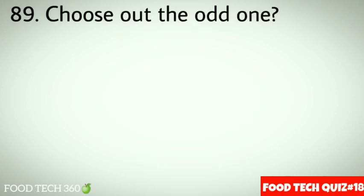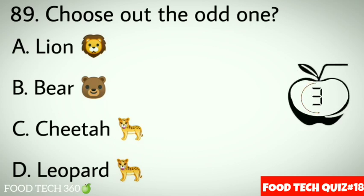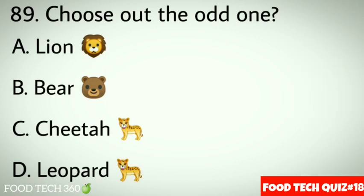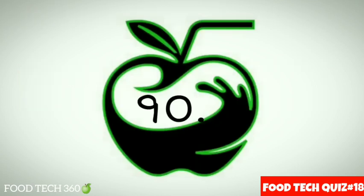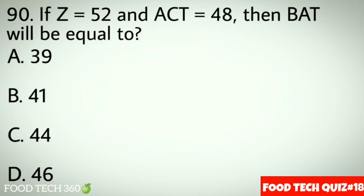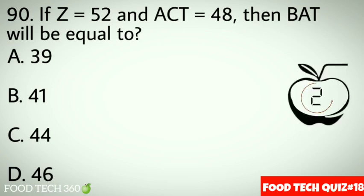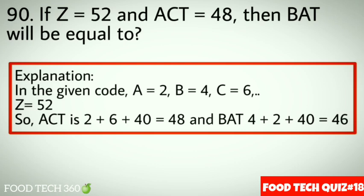Question 89: Choose the odd one out. Options: A. Lion, B. Bear, C. Cheetah, D. Leopard. Correct answer: B. Bear. Explanation: All except Bear belong to the Cat family. Question 90: If Z equals 52 and ACT equals 48, then BAT will be equal to. Options: A. 39, B. 41, C. 44, D. 46. Correct answer: D. 46. Explanation: In this code A=2, B=4, C=6 and so on. Z=52. So ACT = 2+6+40 = 48, and BAT = 4+2+40 = 46.